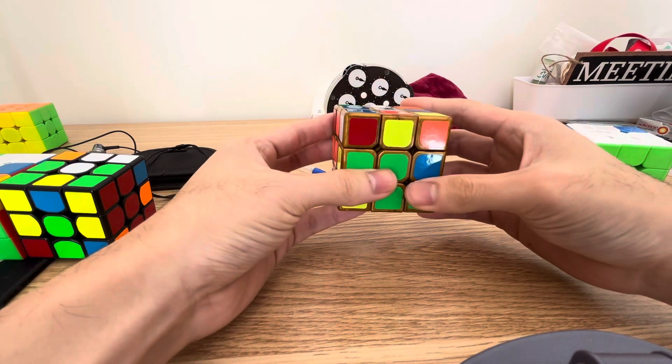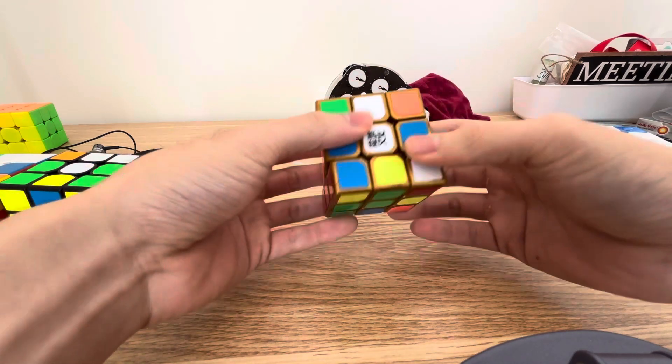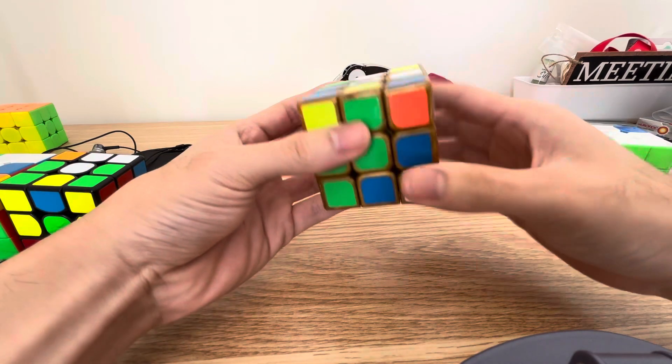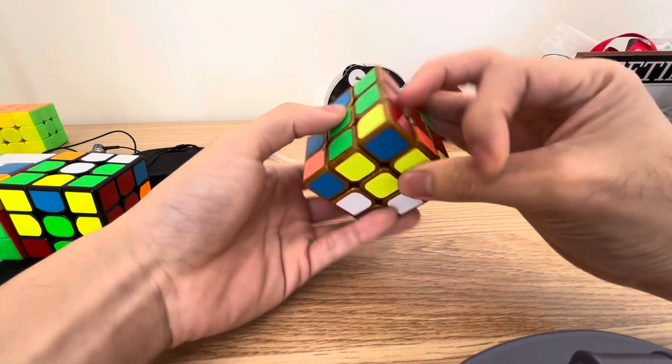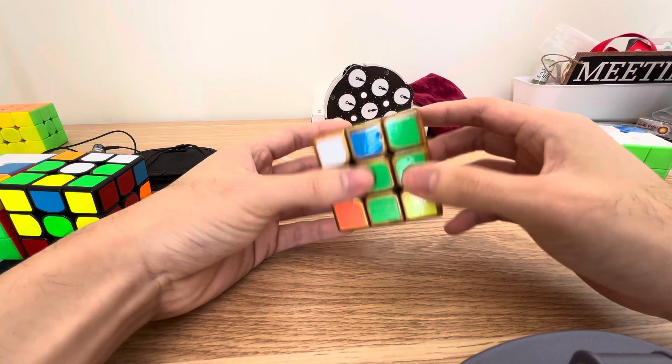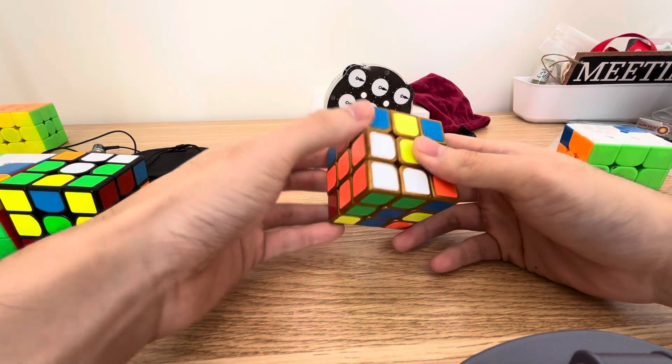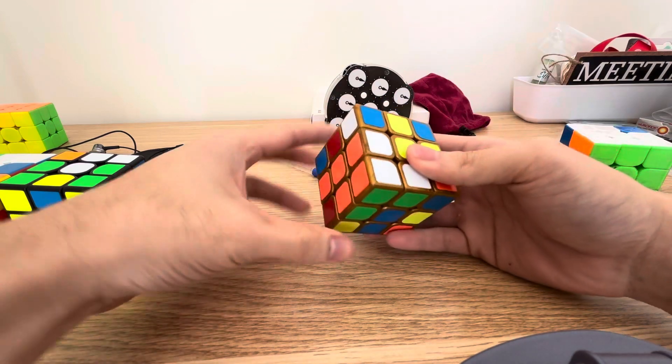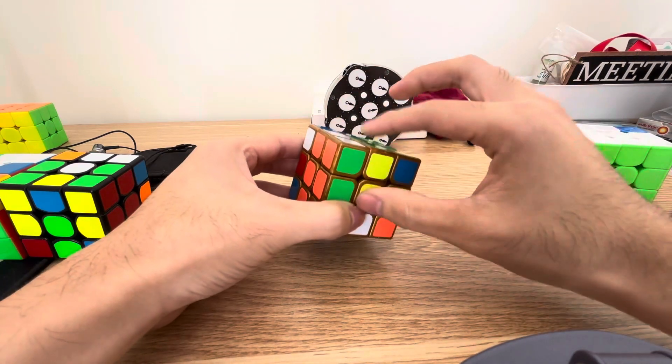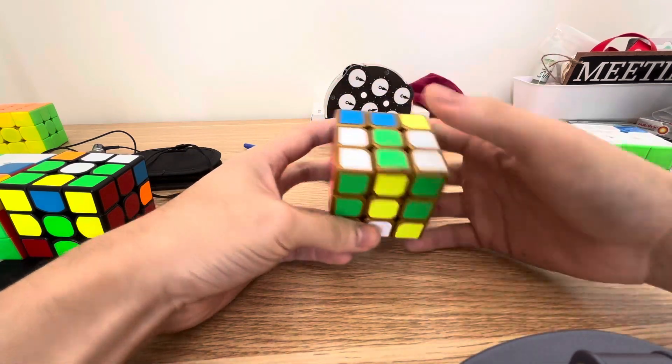Okay, now I do FR', F2, to make this square. And then I also have this square, which was actually already formed once I finished EO, so once again, very lucky. L' connected to this, and R' connected to this, now I have a pseudo-digit block.